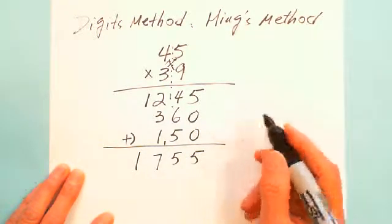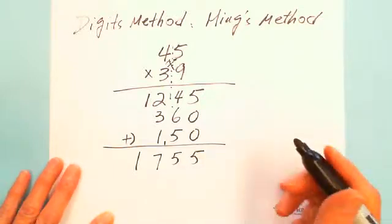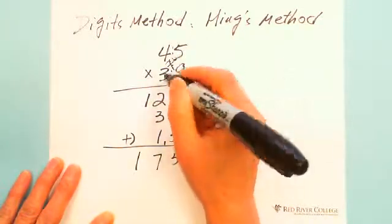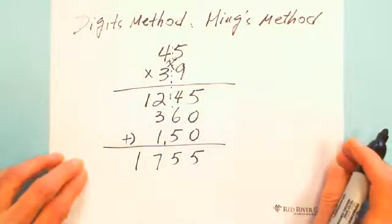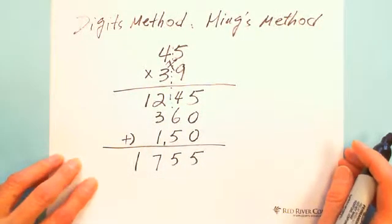Same answer 1755. Without drawing a line, without drawing a box. Digit method. One more example I show you.